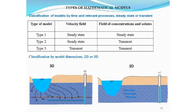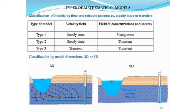Types of mathematical models: Type one — steady state velocity field and steady state concentration field. Type two — steady state flow, transient (unsteady state) concentration. Type three — transient and unsteady both. We also have 3D and 2D models. Sometimes 2D is much more convenient; sometimes we cannot solve anything with 2D and must use a 3D model.